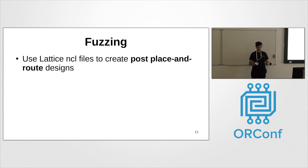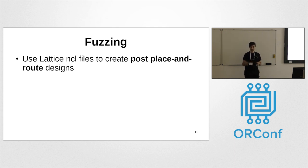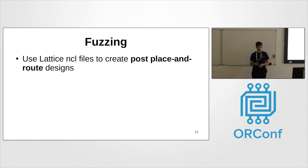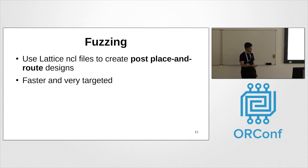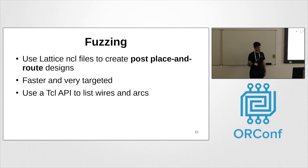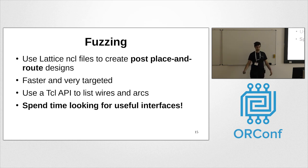To do the fuzzing itself, we use Lattice's NCL files — a way of manually creating post-place-and-route designs. This is a very fast way to create designs at a very low level, so you can create a design with just a single connection, one specific connection at a time. There's also a Tcl API to list arcs and wires in order to target them. The motto is: it's really useful to spend time looking for useful interfaces before going too far into writing bitstream fuzzing code.